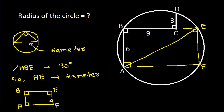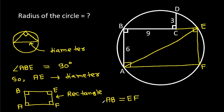So this angle will also be 90 degrees, which means it will be a rectangle. Therefore AB will be equal to EF, and since AB is 6, EF will be 6.